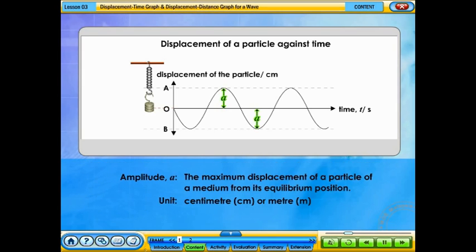The amplitude of a wave is the maximum displacement of a particle of a medium from its equilibrium position. The amplitude of a wave is measured in centimeters or meters.